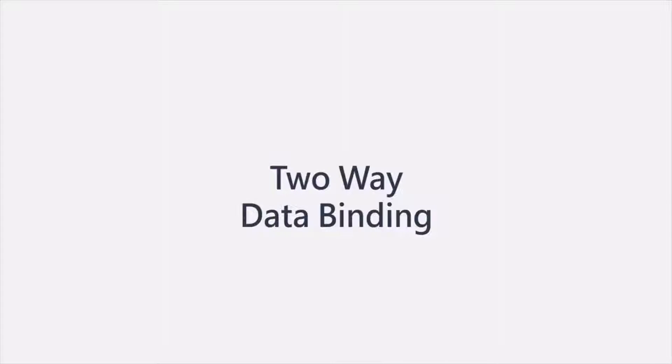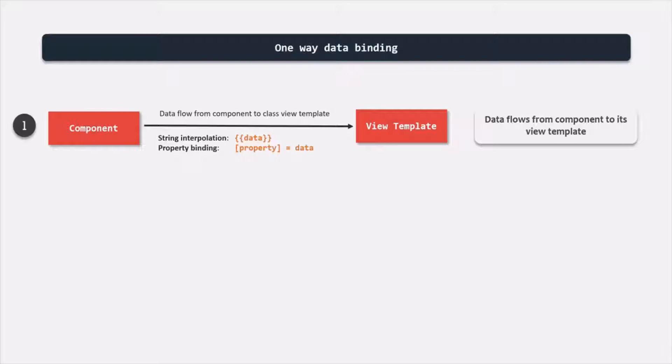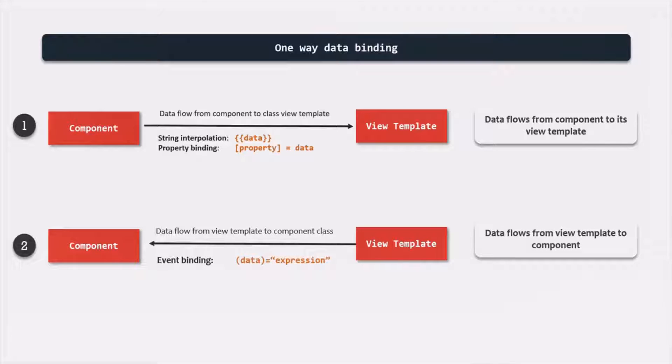In the last few lectures, we learned about data binding from component class to view template and from view template to component class. This is called one-way data binding because we are only binding data in one direction — either from component class to view template or from view template to component class. We can achieve it using string interpolation, property binding, and event binding.